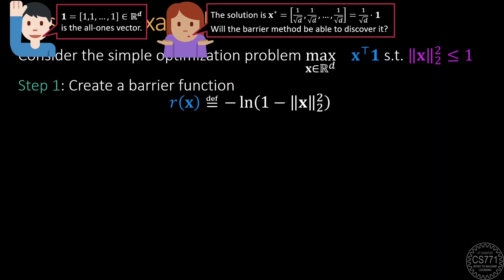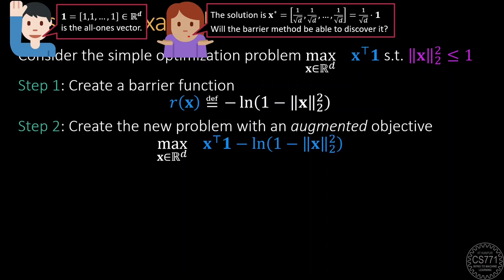There is only one constraint in this problem, so let us create a logarithmic barrier for this constraint. This barrier shoots up to infinity as the Euclidean norm of x approaches 1, thus preventing the constraint from being violated. We can now include this barrier function into the objective to create the augmented objective and eliminate the constraint.